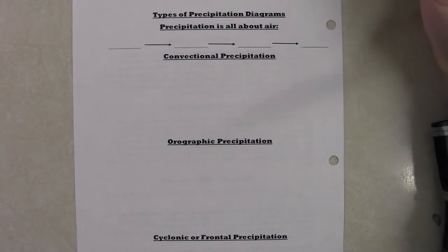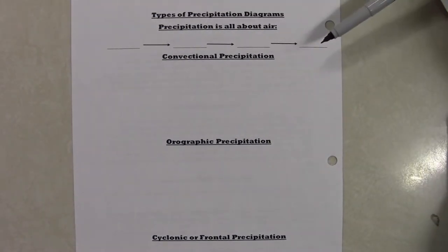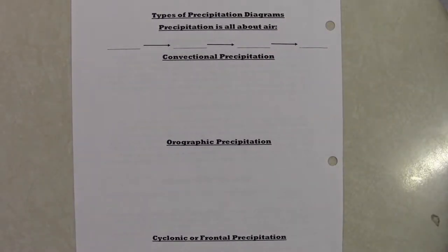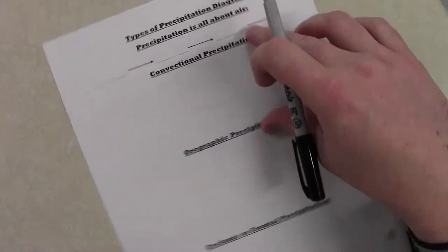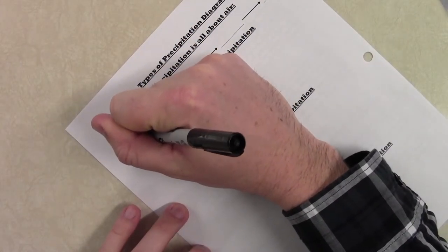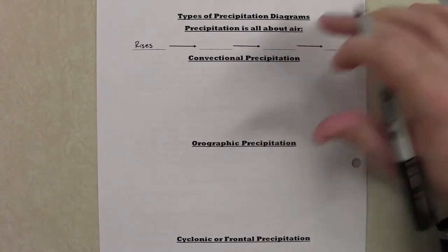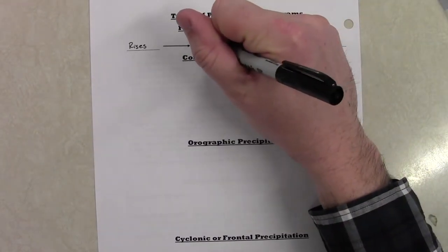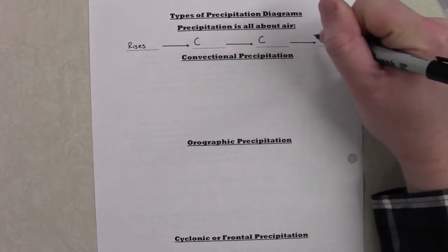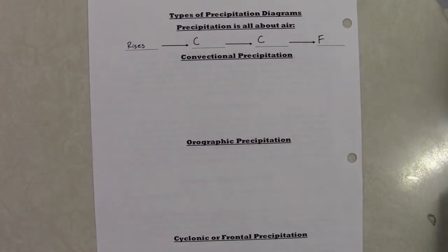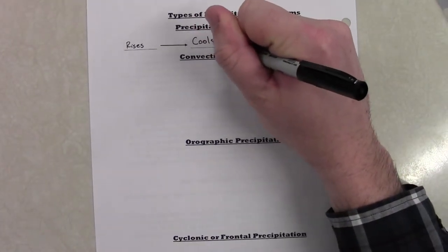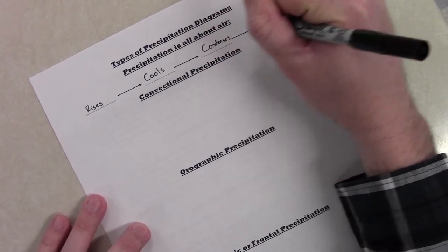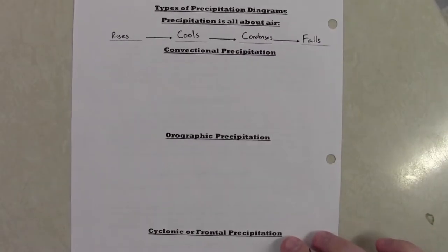Alright, so our first thing here is that air does four things, right? We got a bit of a reminder here across the top. So what are those four magical things that air constantly does that drives overall precipitation in an area? So if I give you the first one, maybe you can finish it. So air rises, and then when air rises, it cools, condenses and falls.